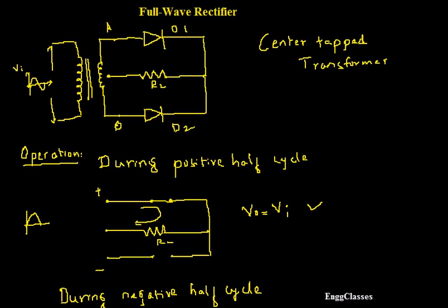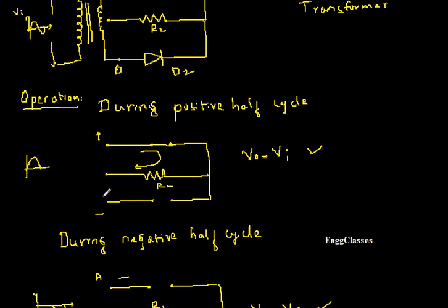Let me consider the transformer here. During the positive or negative half cycle, what does the transformer do? The transformer steps up or steps down the given input voltage. Along with that, it introduces a phase shift at the lower terminal. During the positive half cycle, point A is positive and point B is negative. Why does point B become negative? It is because of the operation of the transformer — it introduces a phase shift.